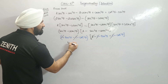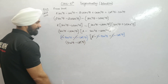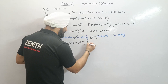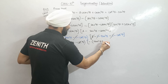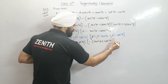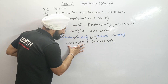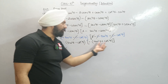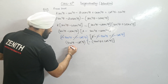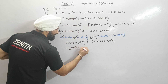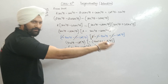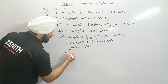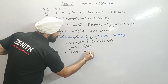Now we have tan²θ minus cot²θ. Taking negative common, we get negative(cot²θ minus tan²θ). This is of the form a² minus b², which factors as (a minus b)(a plus b), giving us cot⁴θ minus tan⁴θ. After the sign change, we arrive at the required result: cot⁴θ minus tan⁴θ.